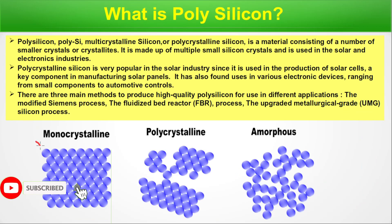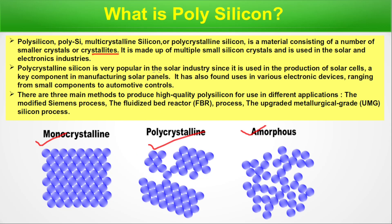What is polysilicon? Monocrystalline silicon is a single crystal where atoms are regularly arranged. Polycrystalline is when multiple monocrystalline grains form together, and in amorphous there is no regular crystalline structure. Polysilicon, also known as polysi, multicrystalline silicon, or polycrystalline silicon, is a material consisting of a number of smaller crystals or crystallites. It is made up of multiple small silicon crystals and is used in the solar and electronic industries.